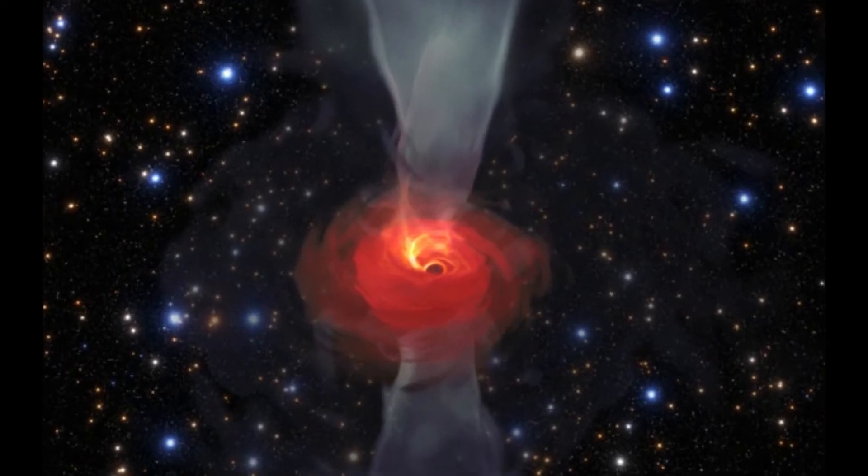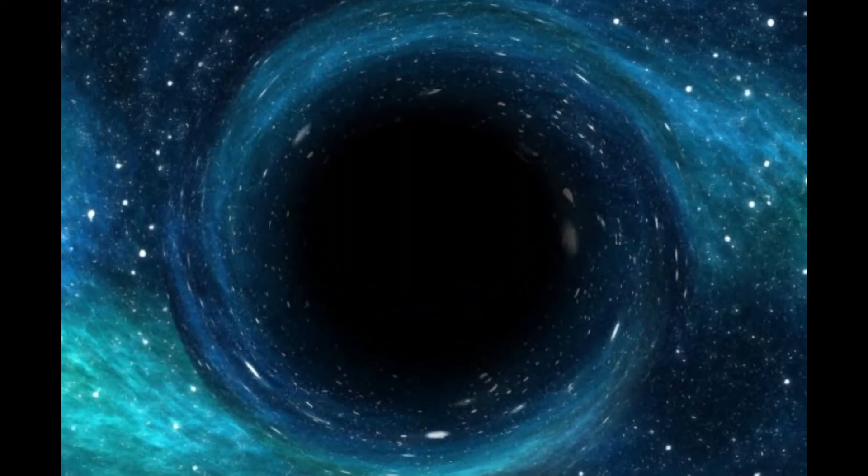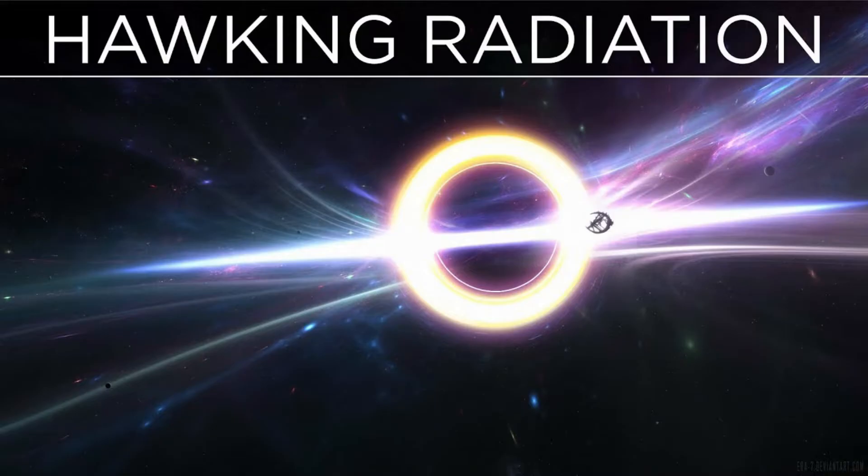Now we're at the end of the video and also at the end of a black hole. Yes, even black holes have an end, according to Stephen Hawking. He came up with a theory that every black hole should constantly emit electromagnetic radiation known as Hawking radiation, as we saw earlier.